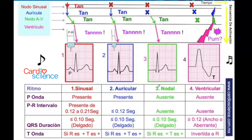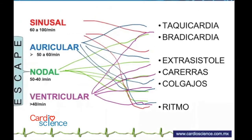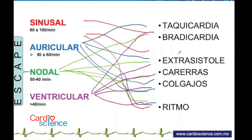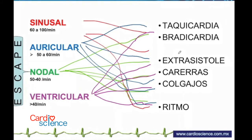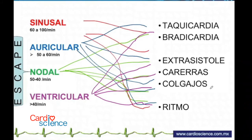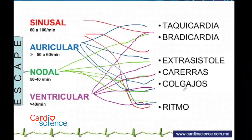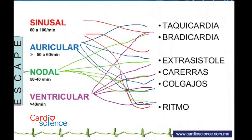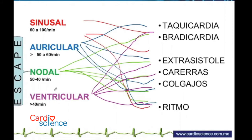Sumando todo: puedo tener taquicardia, bradicardia, extrasístoles en carreras o colgajos, o un ritmo sinusal. Los ritmos auricular, nodal y ventricular se llaman ritmos de escape porque no son lo normal. El ritmo nodal tiene frecuencia entre 40 y 50; el ventricular está abajo de 40.